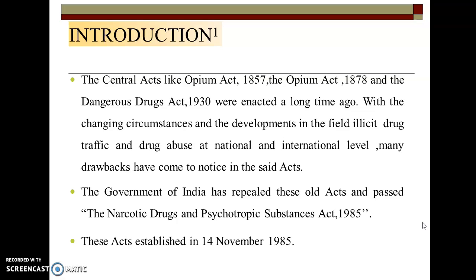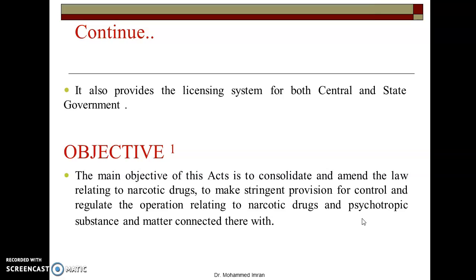There were many different acts, but because of that, many illegal activities were not being controlled. The Government of India passed this stringent act on November 14, 1985. It also provides the licensing system for both central and state government. The main objective of this act is to consolidate and amend the law relating to Narcotic Drugs, to make stringent provisions for control and regulate the operations relating to Narcotic Drugs and Psychotropic Substances and matters connected therewith — meaning to control these substances and safely manage the country.